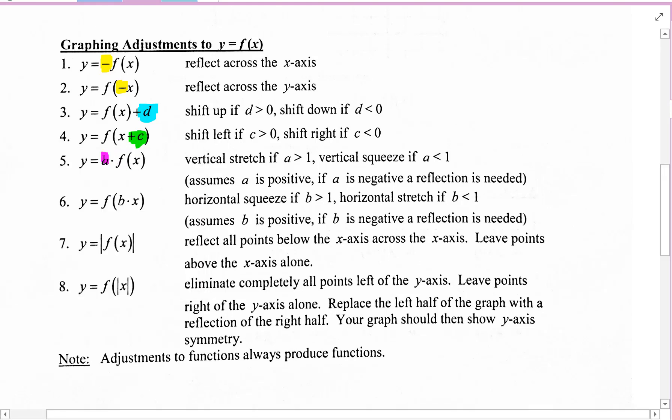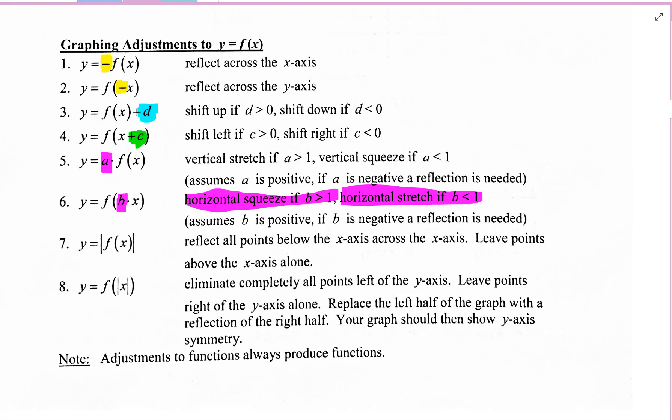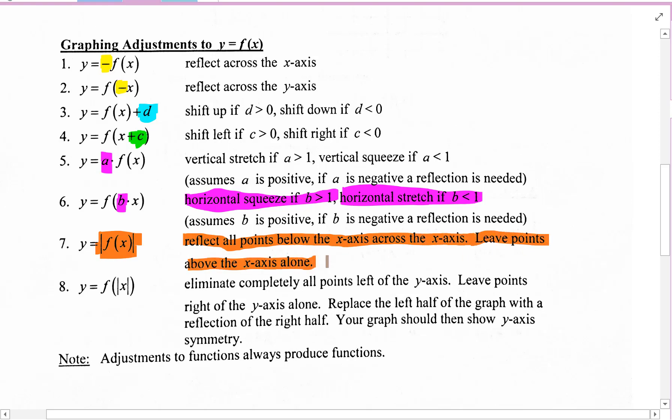When you multiply by a number, you're stretching. Vertical stretch or vertical shrink. When you are multiplying the input, you have a horizontal shrink or horizontal stretch. You have a shrink if b is greater than one, and a stretch if b is less than one. If we had one-half times x, then you would have a horizontal stretch of two, the reciprocal of one-half. To make all of the outputs absolute value or positive, you reflect all points below the x-axis across the x-axis. Leave the points that are above the x-axis alone.